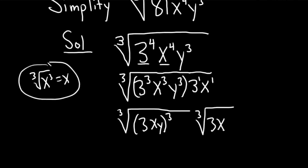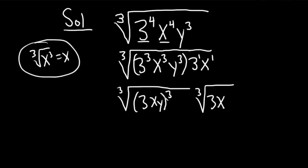You see, that's the idea. We want to use this basic idea where we have something to the 3rd power. And now these basically cancel. So we simply have 3xy cube root 3x. And that completes the simplification.